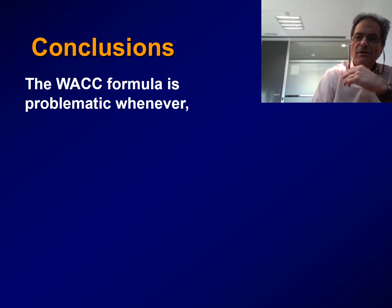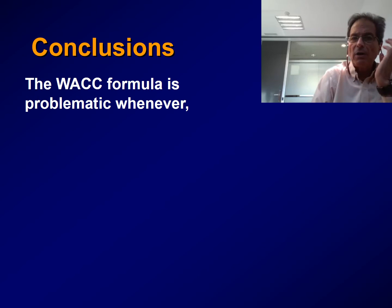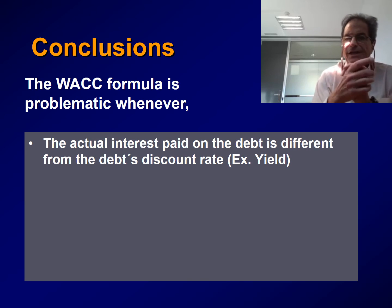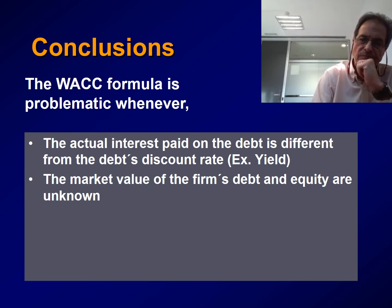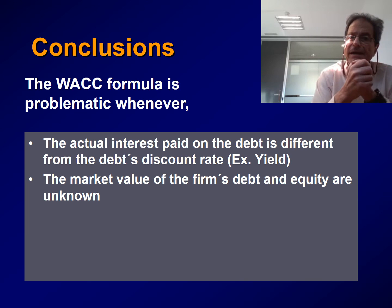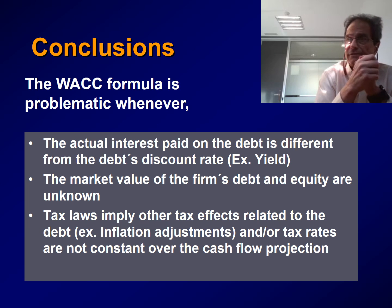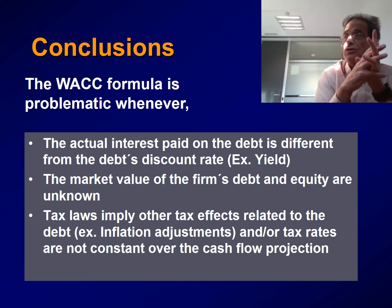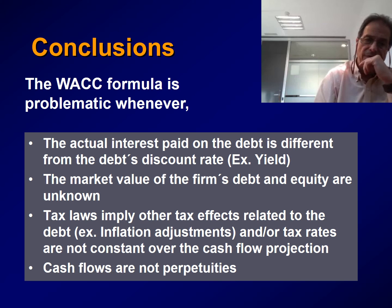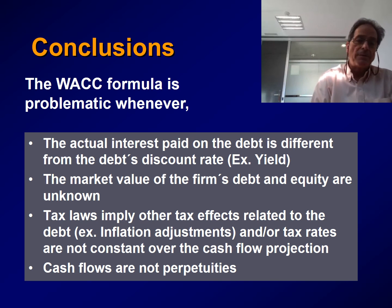To conclude, the WACC formula is problematic whenever: first, the actual interest paid on the debt is different from the discount rate of the debt; second, the market values of the firm's debt and equity are unknown; third, tax flows imply other tax effects related to the debt — for instance, inflation adjustments — or tax rates are not constant over the cash flow projection; and fourth, cash flows are not perpetuities.